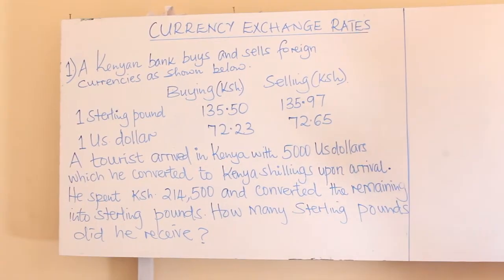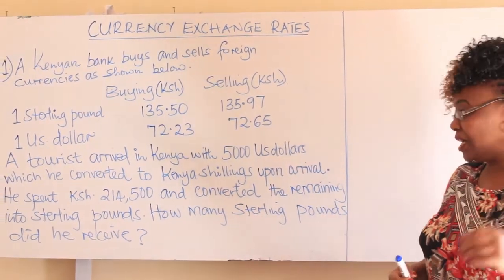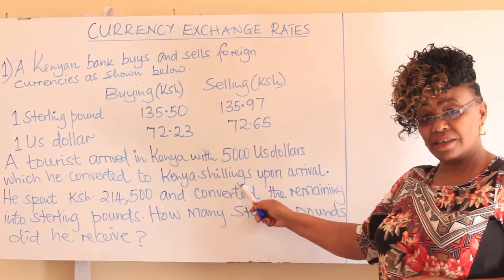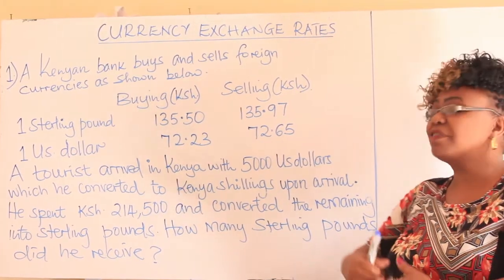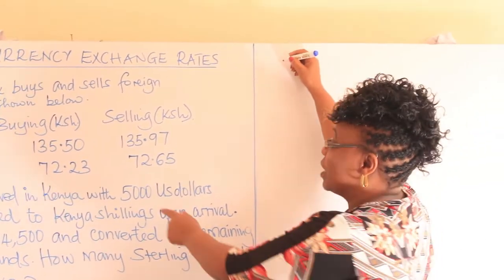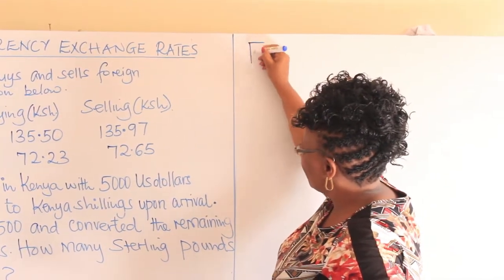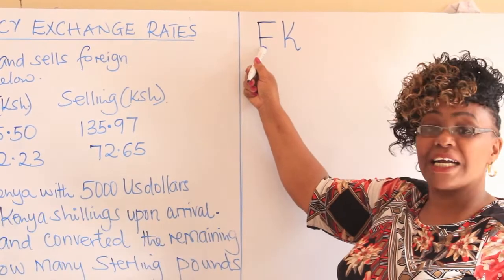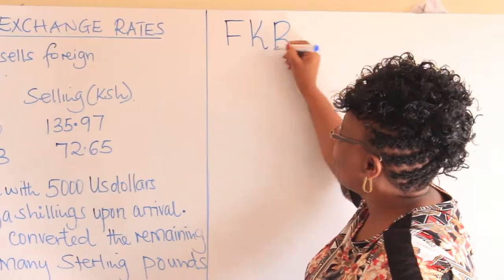Let us go to the first sentence. A tourist arrived in Kenya with 5,000 US dollars, which he converted to Kenya shillings upon arrival — he went to the bank to convert this foreign currency into Kenya shillings. What will the bank do? Will it buy or sell? There is a formula: if you want to convert foreign currency into Kenya shillings, the bank buys. We call it FKB.